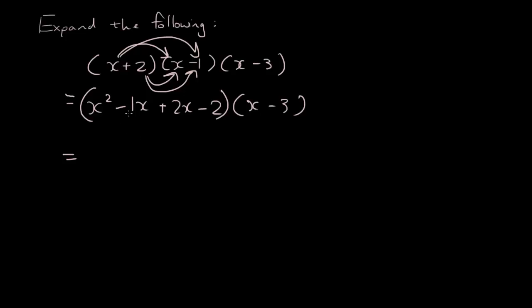Actually I can combine these two terms first because they are like terms. So I have x squared plus x minus 2, bracket, times x minus 3, and now you can draw the arrows again.